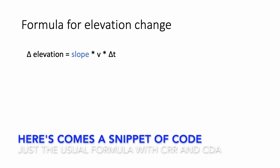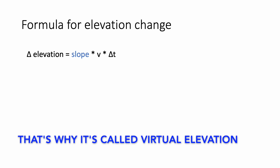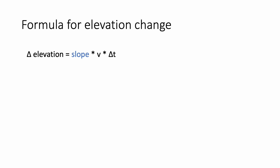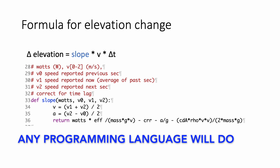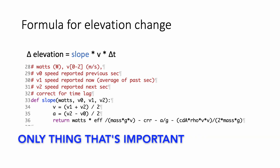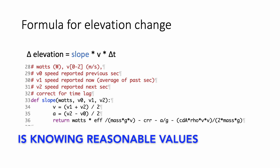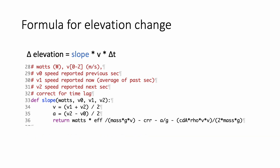We're going to need acceleration to plug into a formula. If we take each track point, we can calculate a virtual elevation. We can calculate delta elevation — the change in elevation — and it's going to equal the slope times the velocity times delta t. Here's my Python function for calculating that slope, which returns a value that plugs into the delta elevation formula. That gives us, second by second, what the virtual elevation change will be.